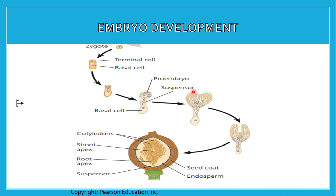As the suspensor elongates, it pushes the embryo deeper into a nutritive and protective tissue. Meanwhile, the terminal cell divides several times to form a proembryo — the early embryo — attached to the suspensor. Then the cotyledons begin to form as bumps of the proembryo. After the rudimentary cotyledons appear, the embryo elongates. Between the two cotyledons, inside the seed, there is what we call the embryonic shoot apex. And at the opposite end of the embryo's axis, where the suspensor attaches, there is what we call the embryonic root apex. After the seed germinates, the apical meristems at the apexes of the shoots and roots sustain the primary growth.